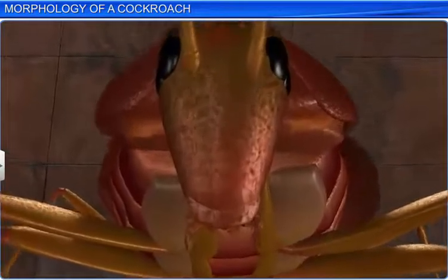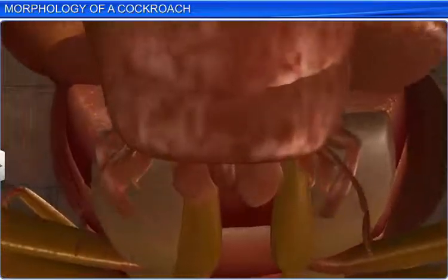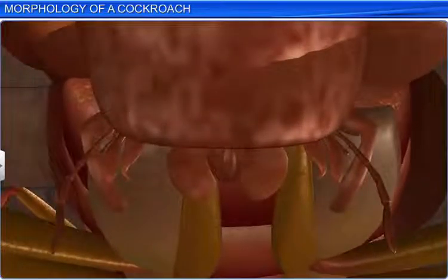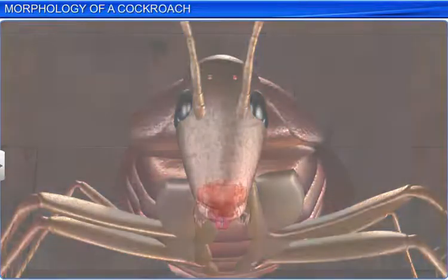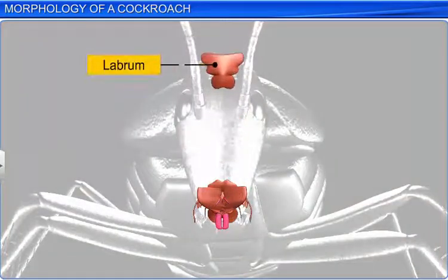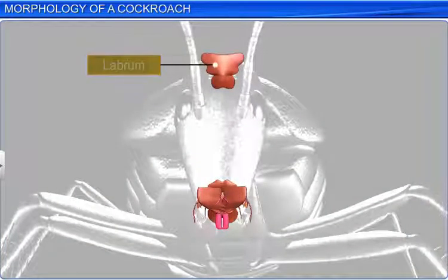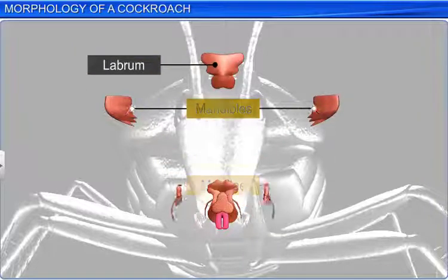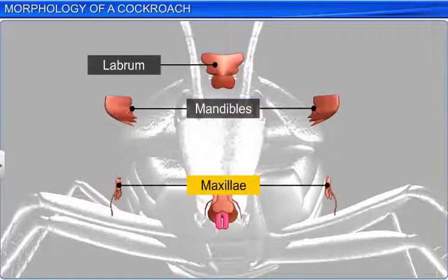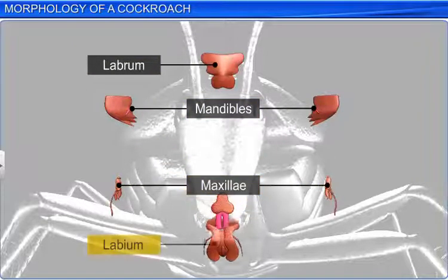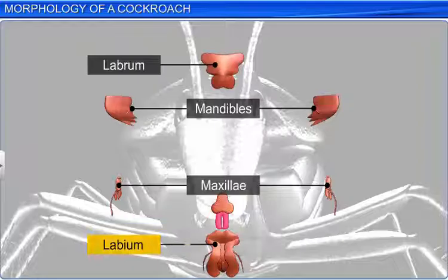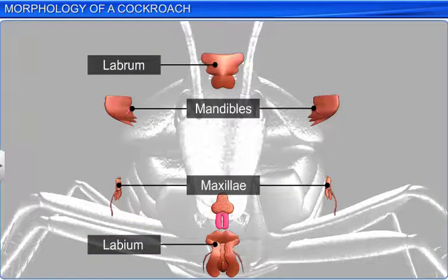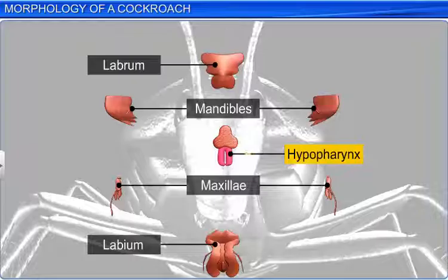The anterior end of the head bears mouth parts, which are of biting and chewing type. The mouth parts consist of an upper lip or labrum, a pair of mandibles and maxillae, and a lower lip or labium. Additionally, cockroaches also have a hypopharynx, which acts as a tongue, and lies in front of the labium.